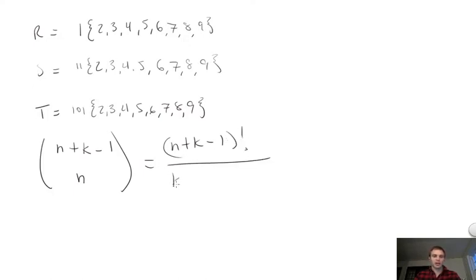K factorial. And then it's N plus K minus one minus K, which is N minus one factorial. Factorial. All right.